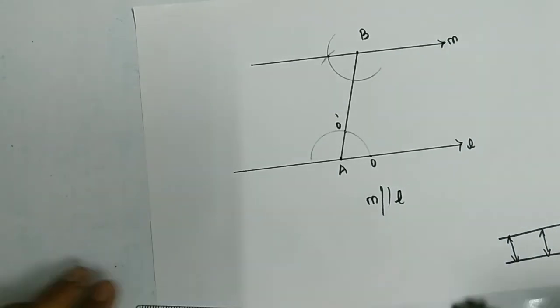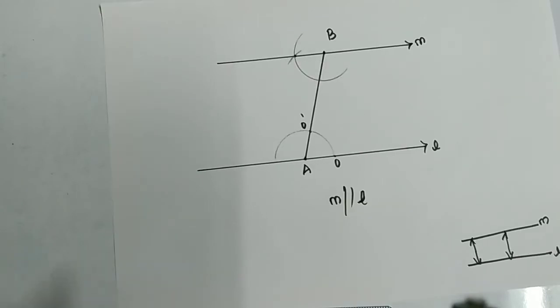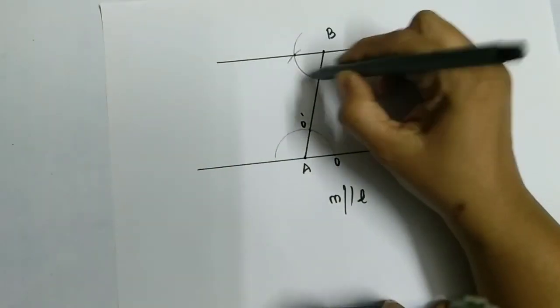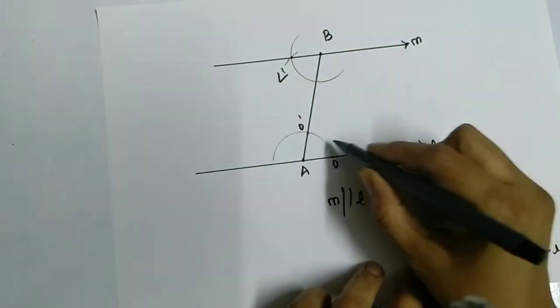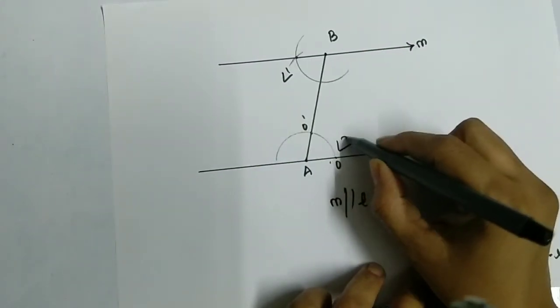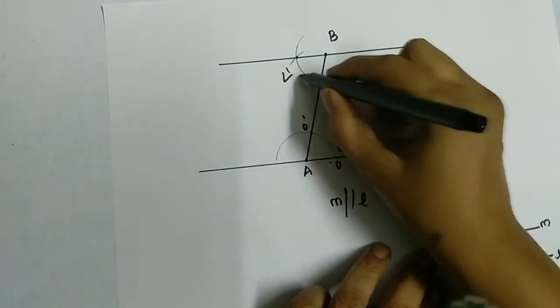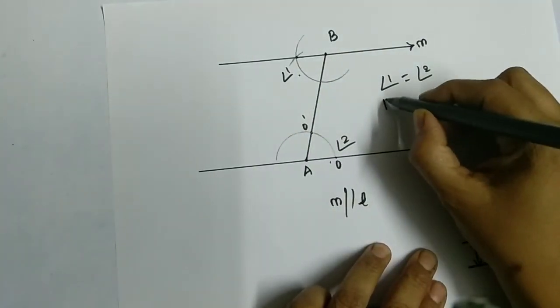You might ask which angle rule I'm going to apply here. See, this angle here formed, if I call it angle 1, and this angle here I call angle 2, they both will be equal. Angle 1 is equal to angle 2, and they both are called interior alternate angles.